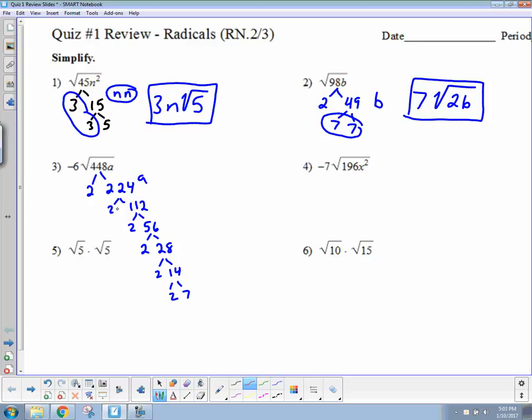Again, circle your pairs. Here's 1, here's another one, and another. It looks like I'm going to have three 2s outside. So don't forget about your negative 6. So negative 6 times 2 times 2 times 2, and then √(7A). Multiply all that out. 2 times 2 is 4, times 2 again is 8, 8 times 6 is 48. So negative 48√(7A).